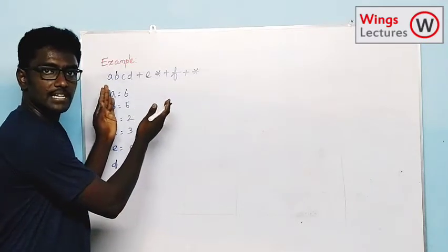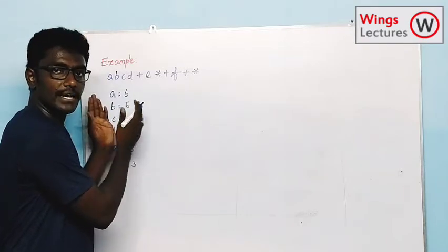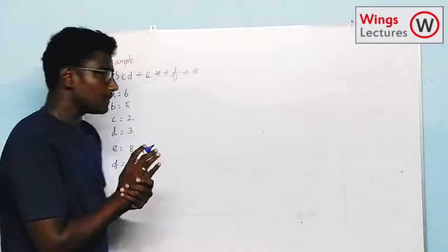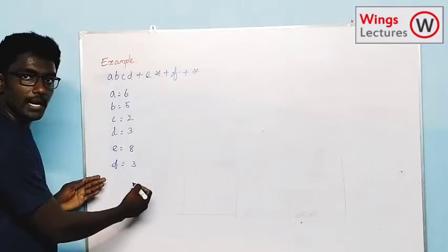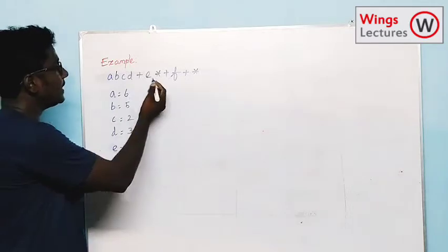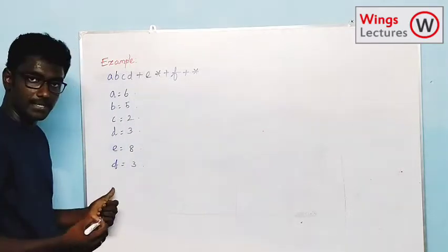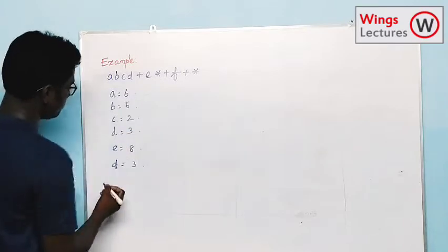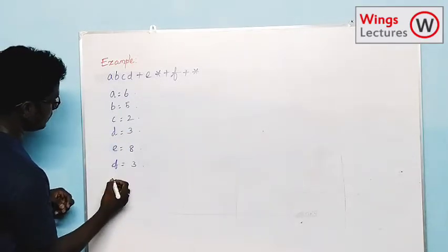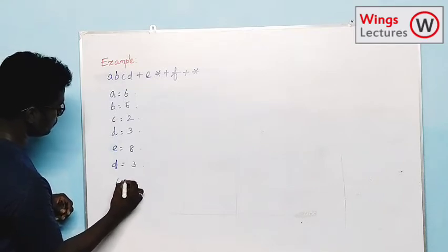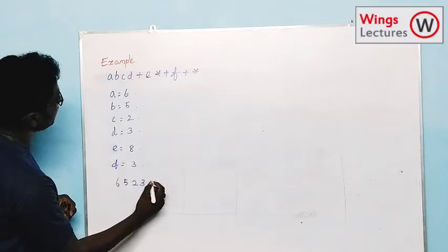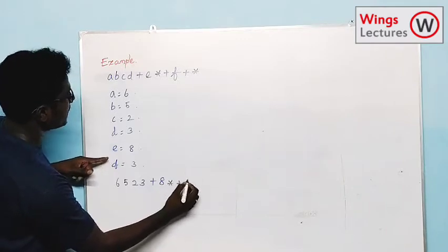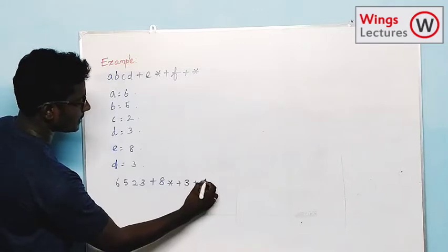From the question itself we can easily find out it's a postfix expression because operands are at the left side and operators are aligned at the right side. So we can come to the conclusion it's a postfix expression. Here I have the values for the variables: A=6, B=5, C=2, D=3, E=8, F=3. So I can now rewrite this as: 6, 5, 2, 3, plus, 8, star, plus, 3, plus, star.